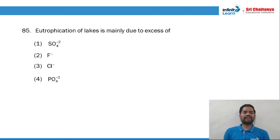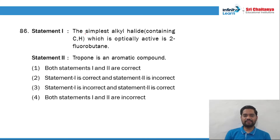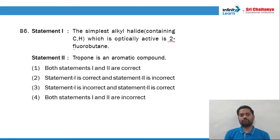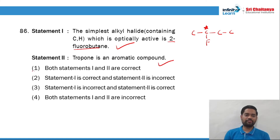Question 85: eutrophication of lakes is mainly due to excess of phosphate ions — we just discussed this same question. Question 86: the simplest alkyl halide containing CH that is optically active is 2-fluorobutane — yes, that is right. Tropone is an aromatic compound — yes, that is also right. So option 1 is the right answer.